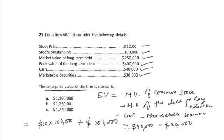So it will give me an enterprise value of $1,180,000. So the correct option is option A, that is, the enterprise value of the firm is $1,180,000.